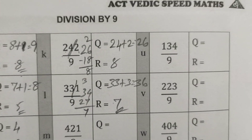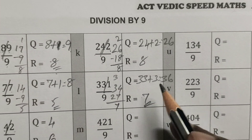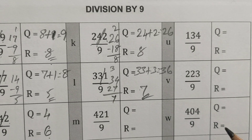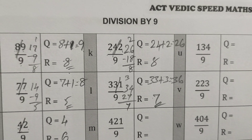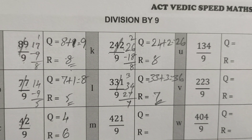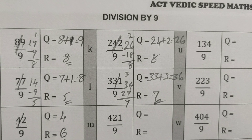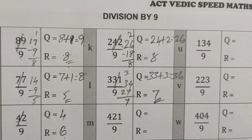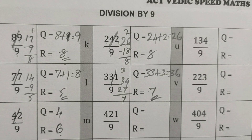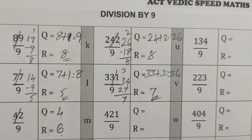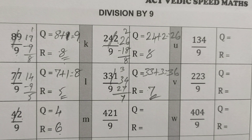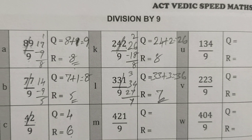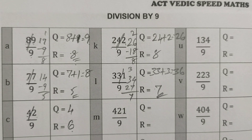If you check the calculator, it will be easy to do. We can easily understand it. Division by 9. This is 99999. In case, the number 874 will be covered in the next video. Thank you.